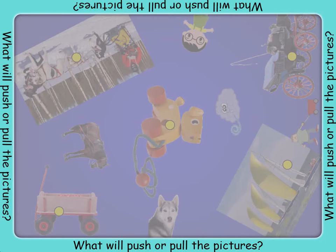Each picture shows something that is normally pushed or pulled. Find the matching pictures that show what pushes or pulls it. For example, a swing is pushed by a person, so you would look for a person to match with the picture of a swing.